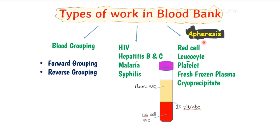Another important process is apheresis, in which we separate blood components so we can give different components to different patients based on their requirement. For example, if someone needs only RBCs, giving whole blood could cause circulatory overload. We separate red blood cells, leukocytes, and platelets by centrifugation — RBCs settle at the bottom, plasma at the top, and the buffy coat in the middle containing platelets and WBCs.